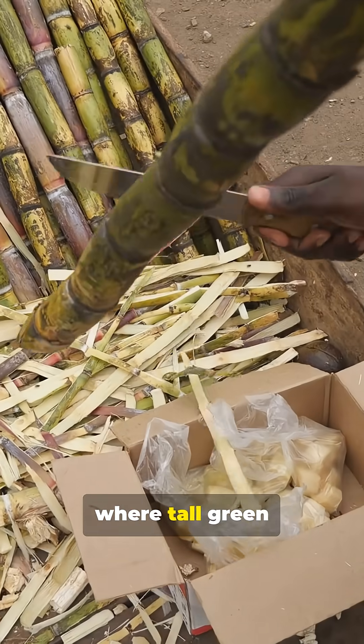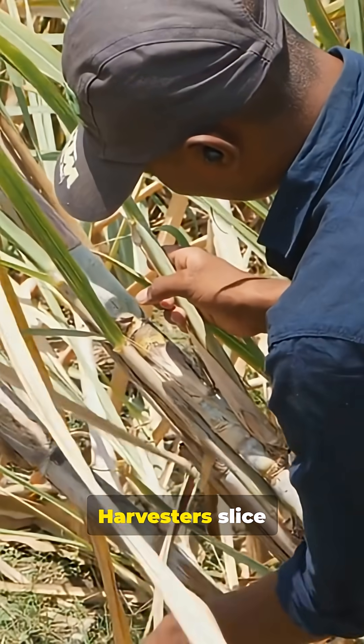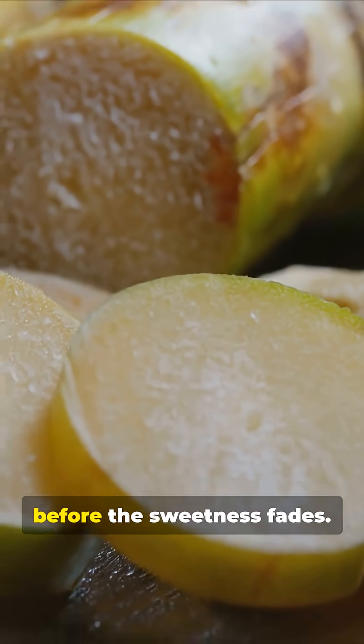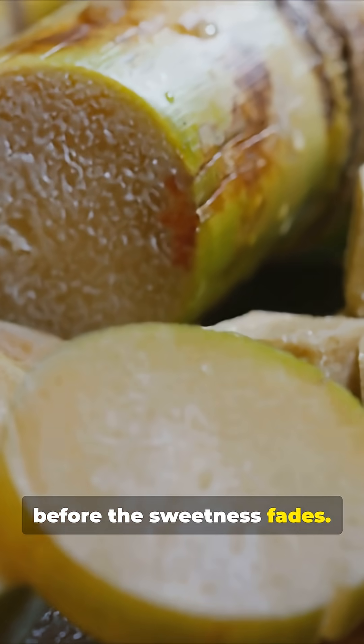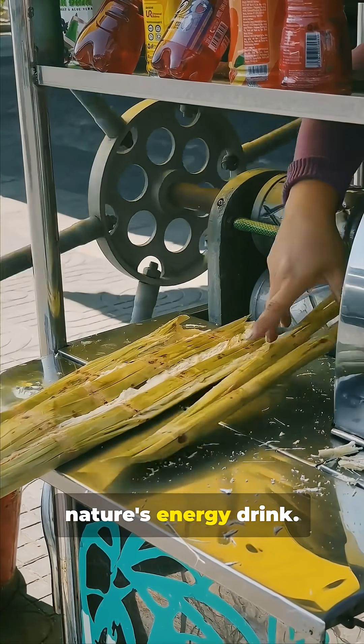It starts in the fields where tall green stalks of sugarcane sway under the sun. Harvesters slice them down and load them into trucks within hours before the sweetness fades. Each cane is packed with raw juice, almost like nature's energy drink.